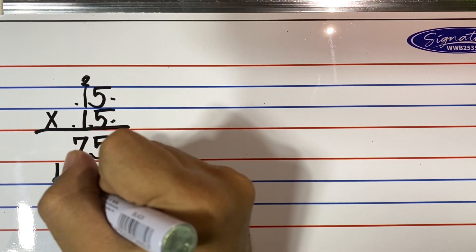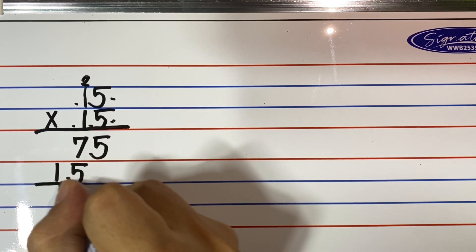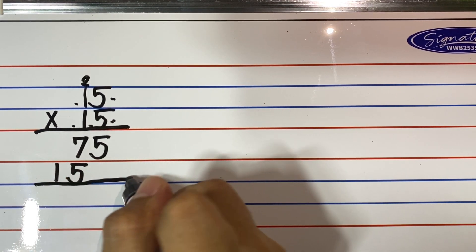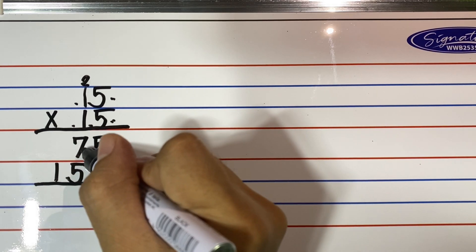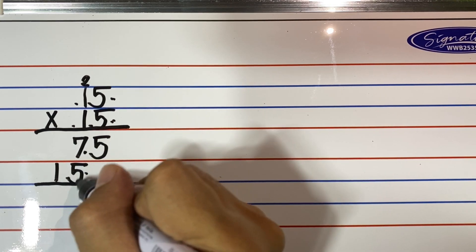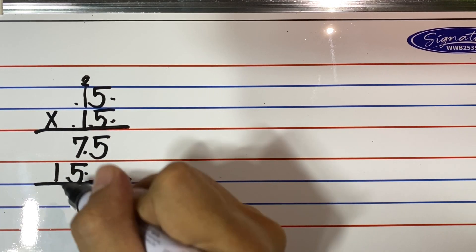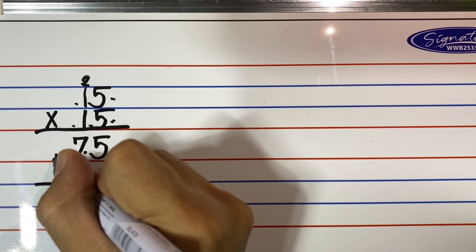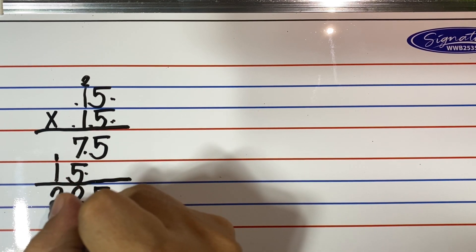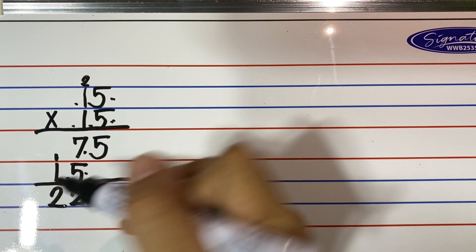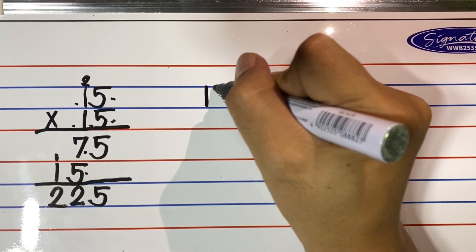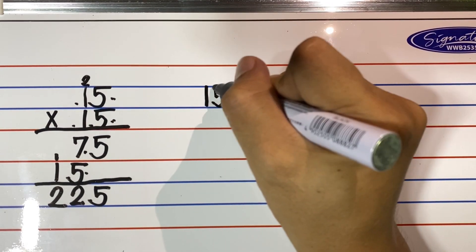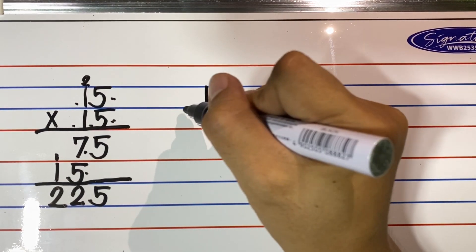Next, add both partial products by bringing down 5, then 7 plus 5 is 12 — write 2 and carry 1. 1 plus 1 equals 2. The final product is 225. For the short method, we need to arrive at the same final product of 225 without going through the long process.